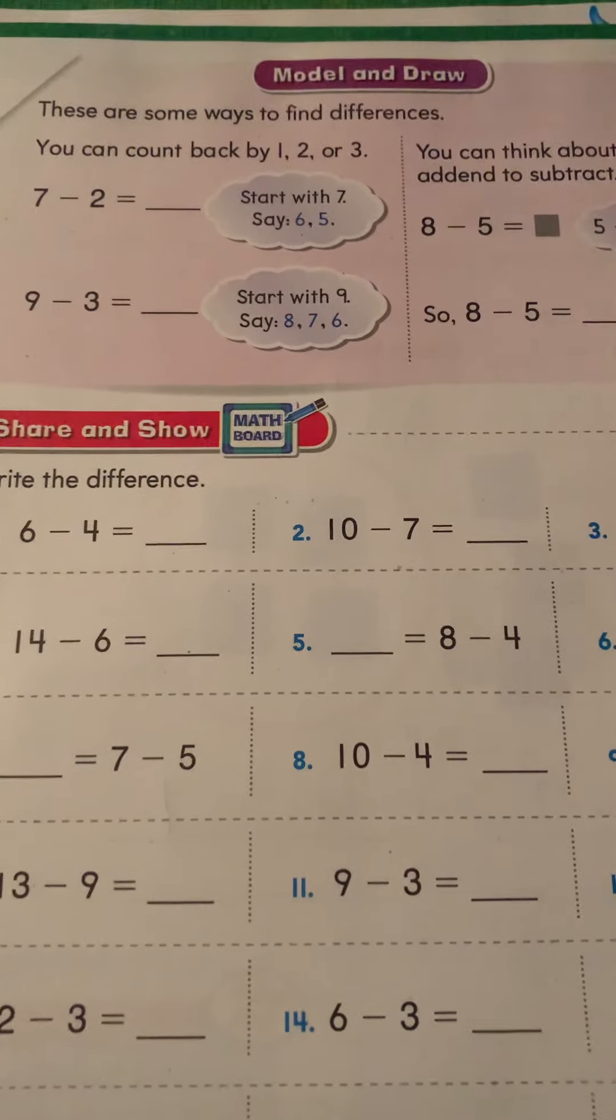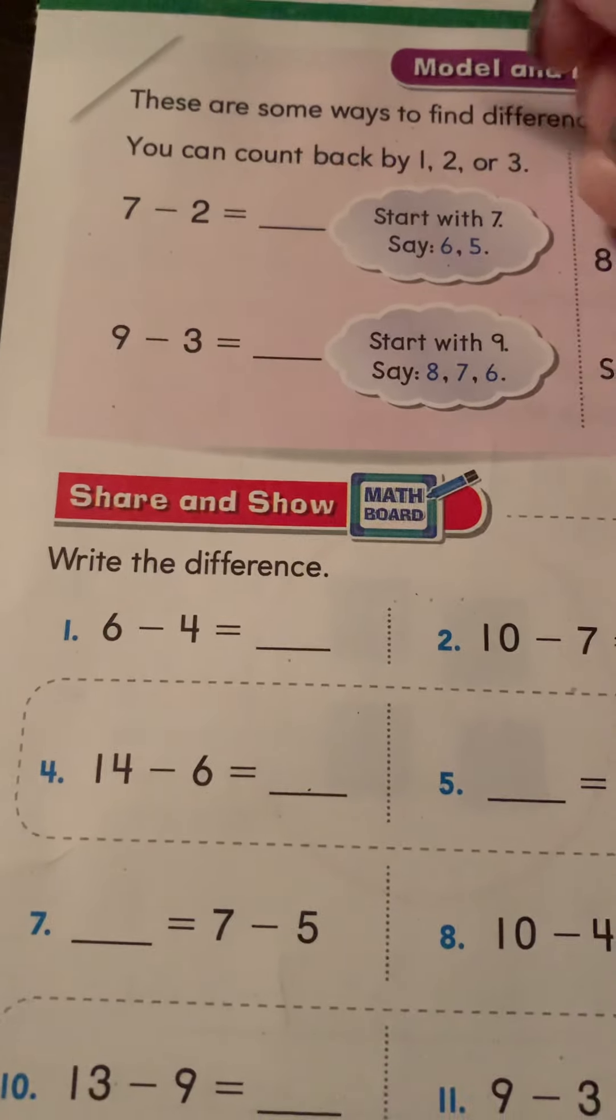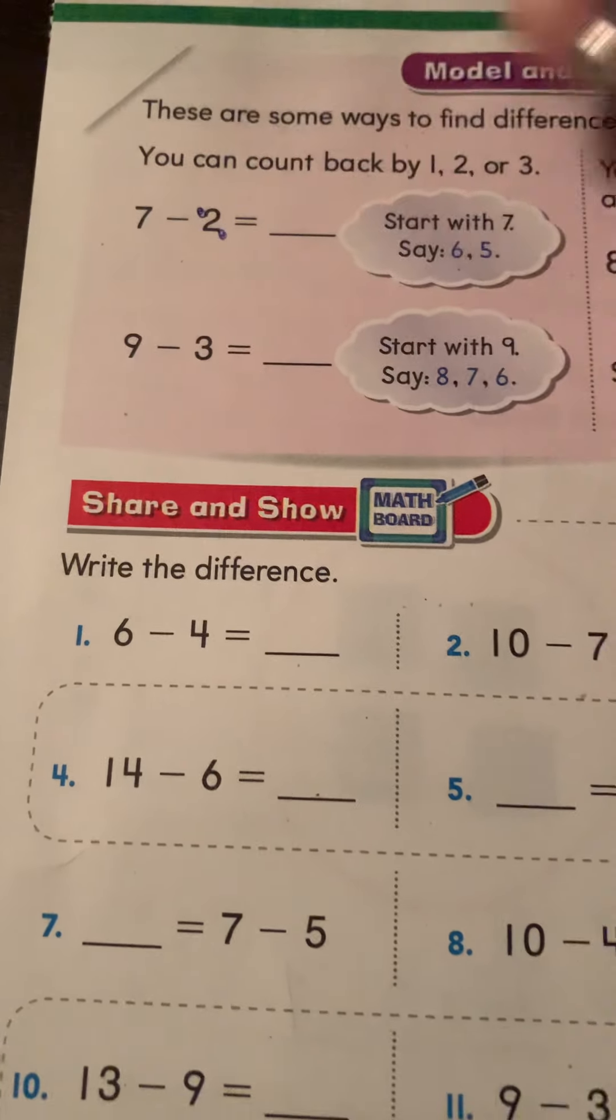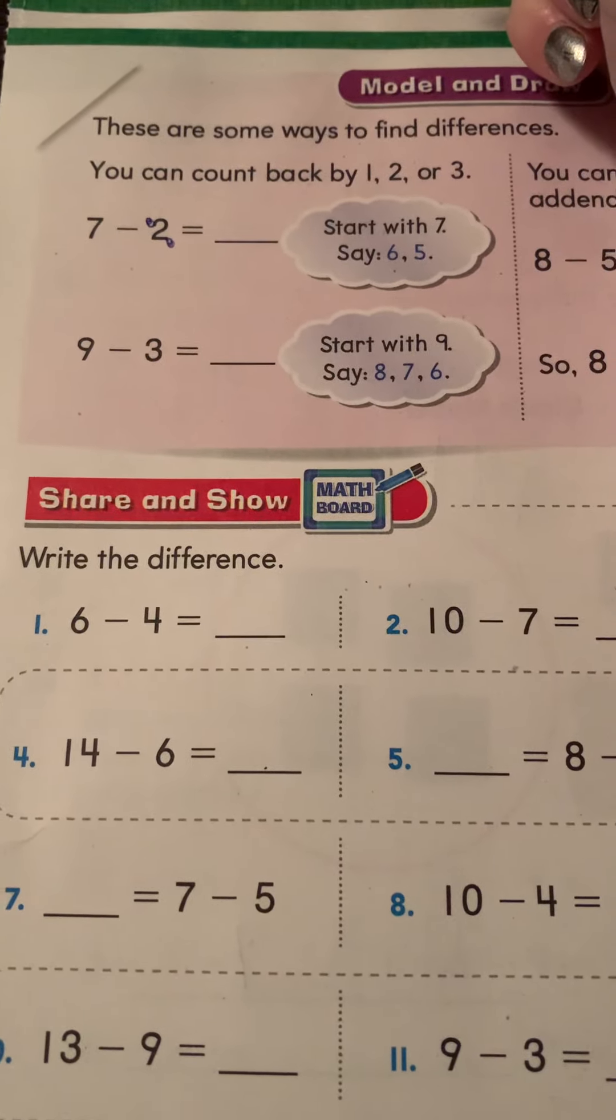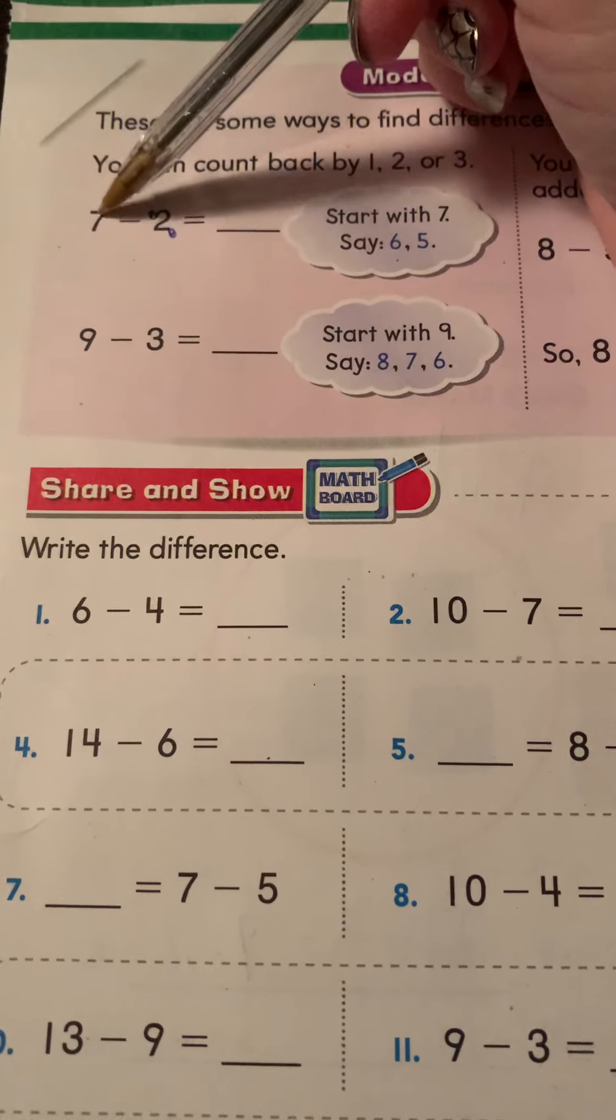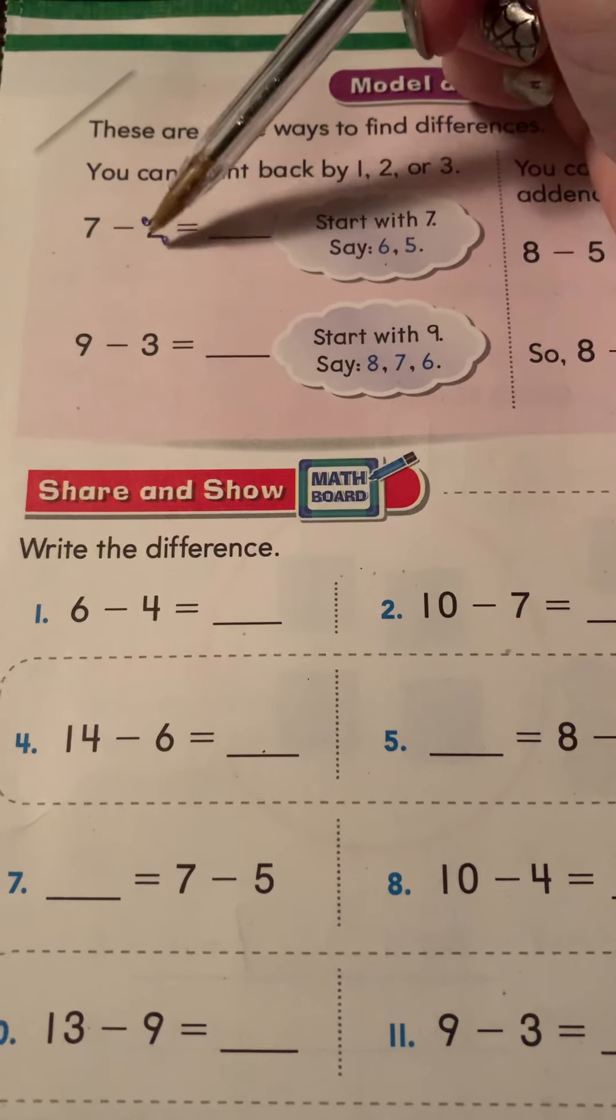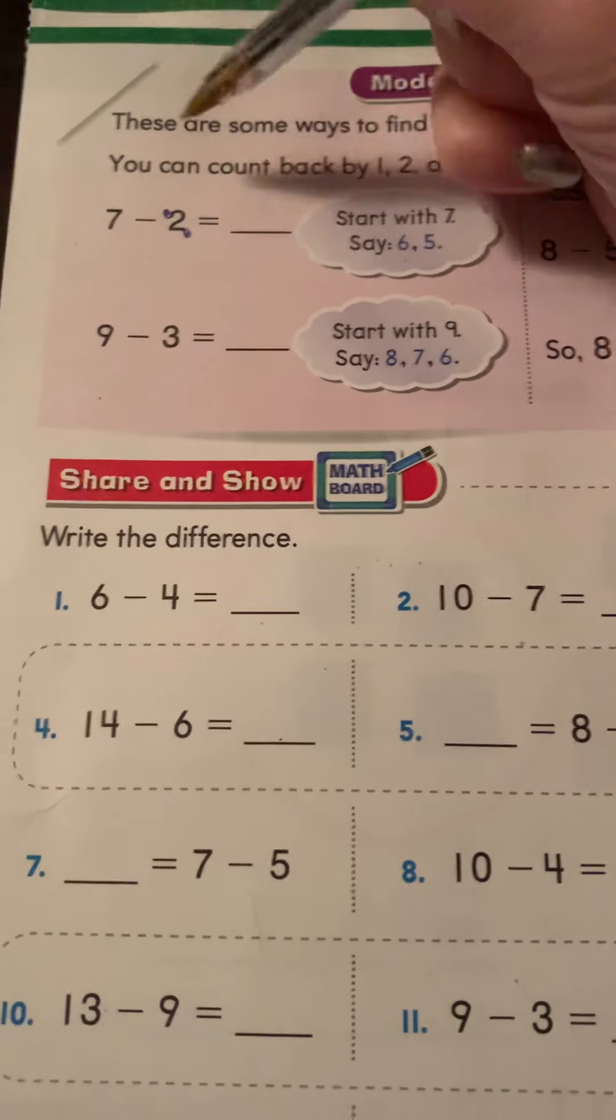So you can count backwards. I know we've been talking a lot about touch points in my class. The number two gets two touch points, one, two. That will really help you if you can put your touch points on because then you can count backwards. You can put seven in your head and count backwards: seven, six, five. Seven minus two is five.